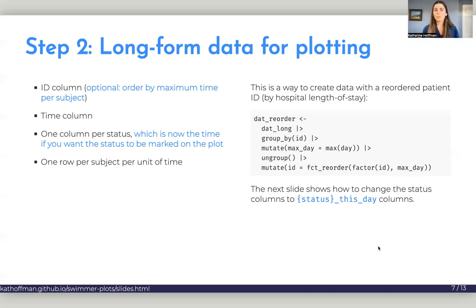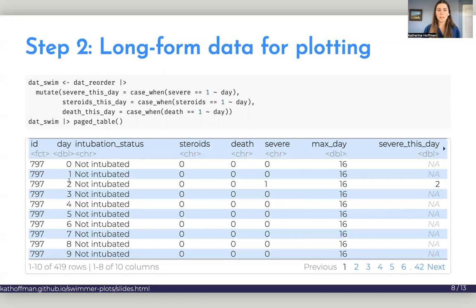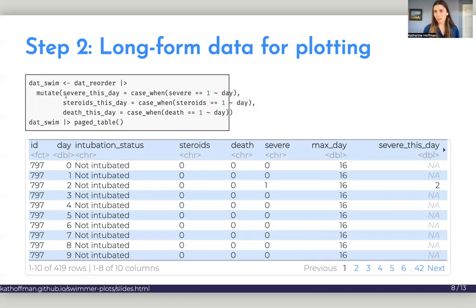We'll have the same time column, but for our status column, we now want to make a status column that is the time that the status occurred, assuming you want the status to appear on the plot. So instead of it just being an indicator variable for status, we're going to make it be the time if the status occurred and you want it shown on the plot. And we're still going to have one row per subject per time, but let's look at how we can modify that status variable.